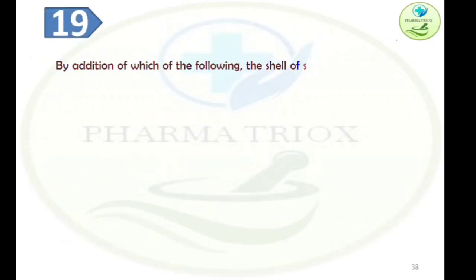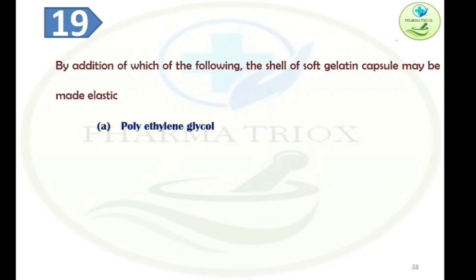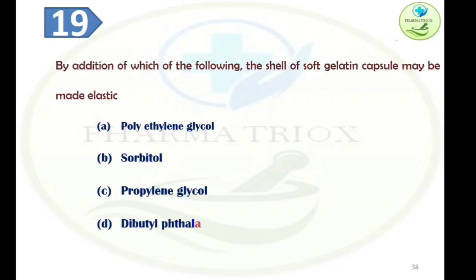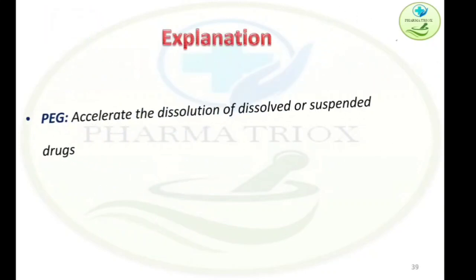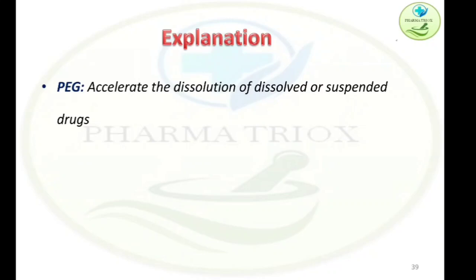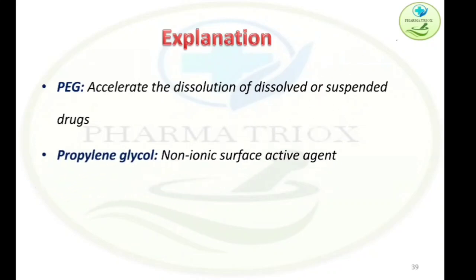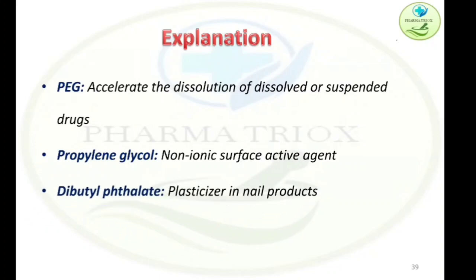Question nineteen: By addition of which of the following can the cells of soft gelatin capsules be made elastic? Option A: polyethylene glycol, Option B: sorbitol, Option C: propylene glycol, Option D: dibutyl phthalate. The answer is Option B — sorbitol. Sorbitol is added to capsules to make them elastic. PEG (polyethylene glycol) accelerates dissolution of dissolved or suspended drugs. Propylene glycol is a non-ionic surface-active agent. Dibutyl phthalate is a plasticizer used in nail products.